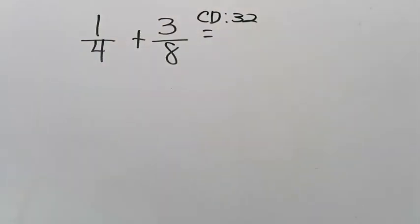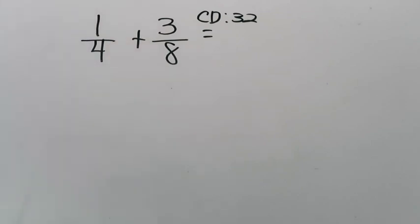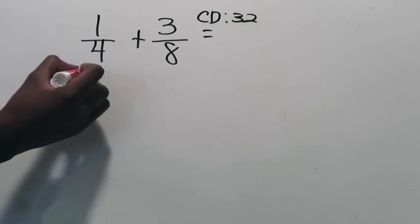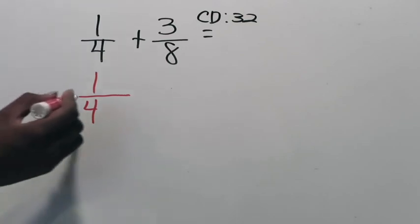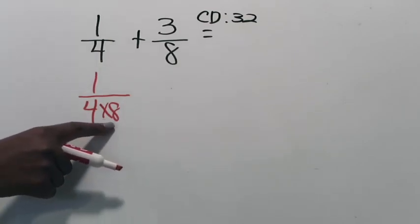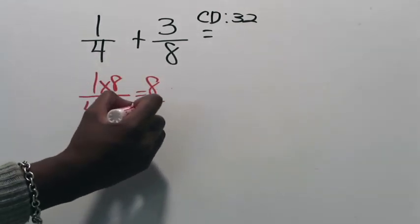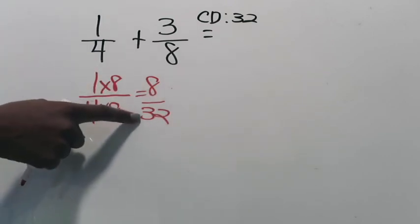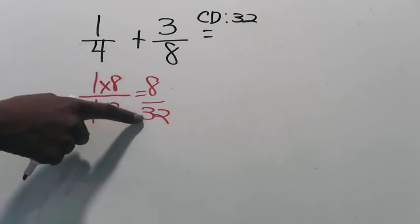My common denominator for this problem is 32. Now I need to go back and manipulate each fraction so its denominator reads as 32. Looking at 1/4 first — I ask myself: 4 times what equals 32? That's 8. Whatever I multiply the denominator by, I must also multiply the numerator by. So 1 times 8 is 8 and 4 times 8 is 32, giving me the new fraction 8/32. This is an equivalent fraction.